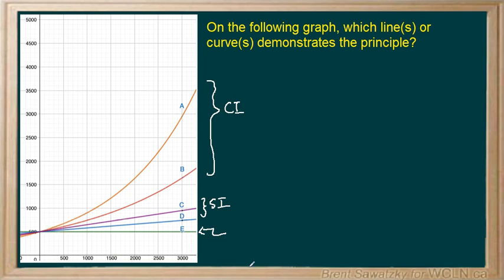So E is the only one that stays with the principle, it doesn't have any growth at all. So I suppose what they're looking for here, demonstrating the principle, well yeah I guess that would make sense that E stays at the level of the principle and therefore we could say it demonstrates the principle.